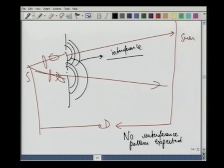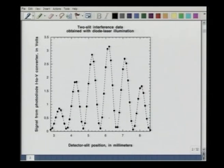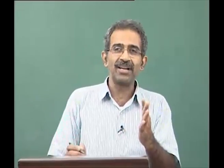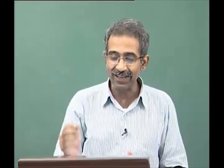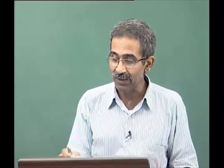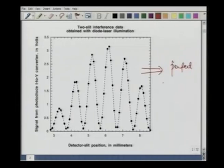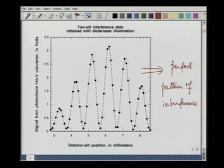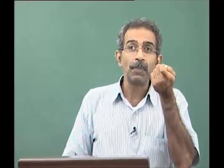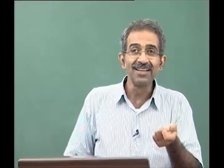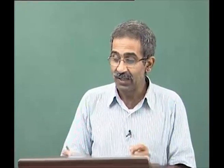This experiment is actually taken from a laser beam whose intensity was made so small that there was only one photon on average between the source and the screen. You do not expect any interference pattern. However, what people did was to put a lot of photo detectors along the screen and wait for a long time. What they found was a perfect interference pattern — a perfect pattern of interference.